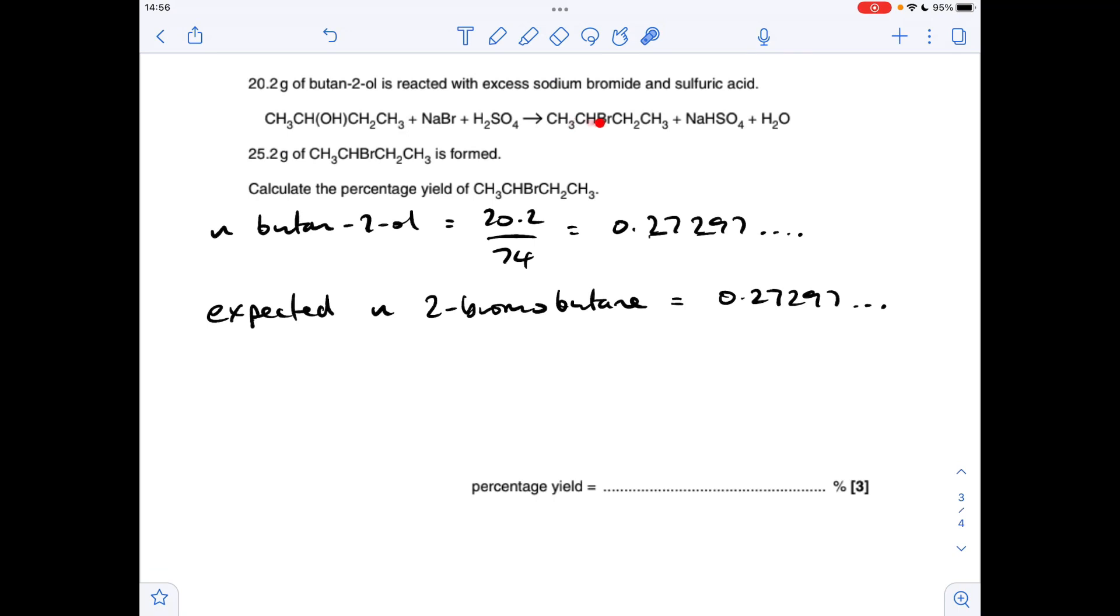The expected moles of product, this 2-bromobutane, is going to be the same because we've got this 1-to-1 ratio in the reaction. Now we'll work out the actual moles of 2-bromobutane that's been formed, so mass over MR, we've got that many moles.